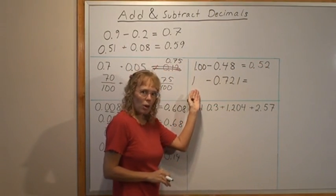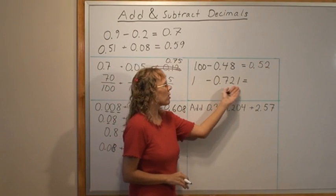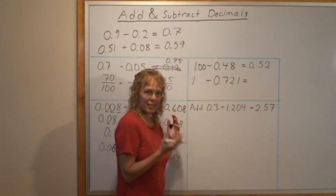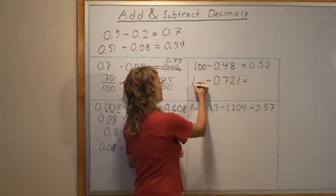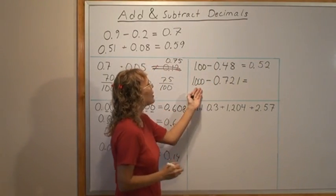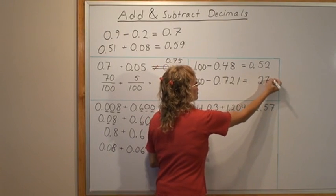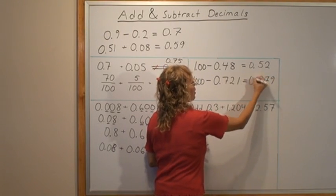Similarly here you have one whole and then some thousandths. So let's make this, think of this as thousand thousandths. And then you can subtract mentally and we should get 279 thousandths.